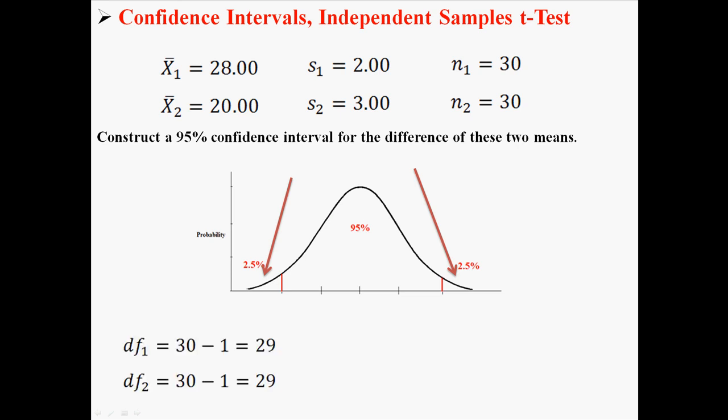Remember, because we're doing a t value, we also have to look up the degrees of freedom. Now in an independent samples t-test, we're going to have two degrees of freedom, one for each sample, one for sample 1 and one for sample 2. In this case, the degrees of freedom for each sample is 29.